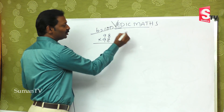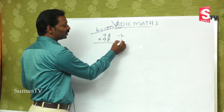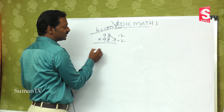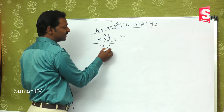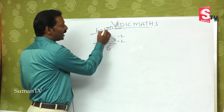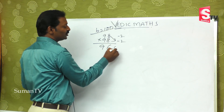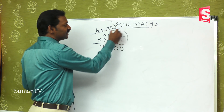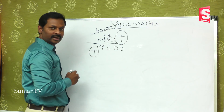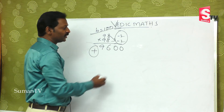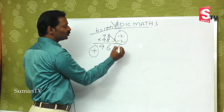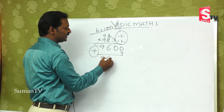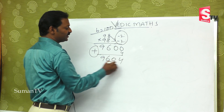Since 100 is the base and it is less than 100 by 2, the first part of the answer is 96. We call the base number 2, so minus into minus is plus — giving us 2 times 4 and 9, 6, 0, 4. That's right.